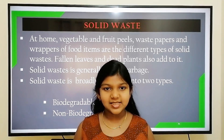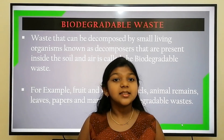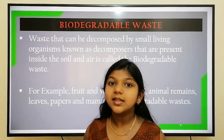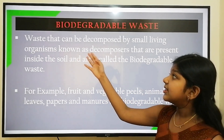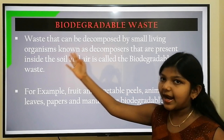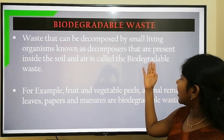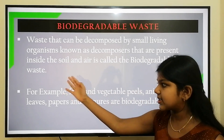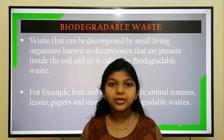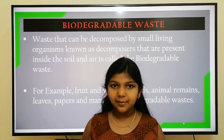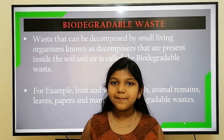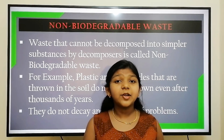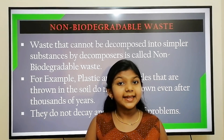Solid waste is classified into two types: biodegradable waste and non-biodegradable waste. Biodegradable waste is waste that can be decomposed easily — that is, waste that can be decomposed by small living organisms known as decomposers, which are present inside the soil and air. For example, fruit and vegetable peels, animal remains, waste paper, fallen leaves, and dead plants are some examples of biodegradable waste.